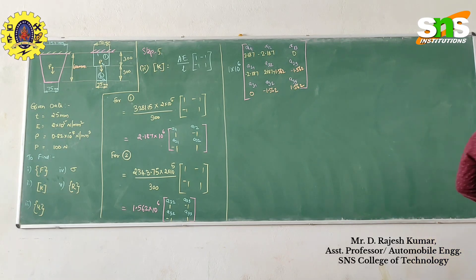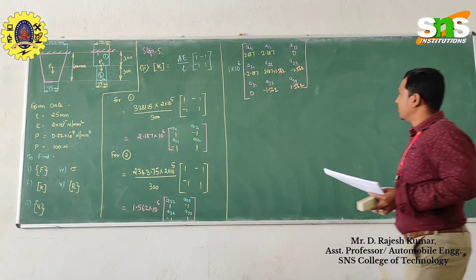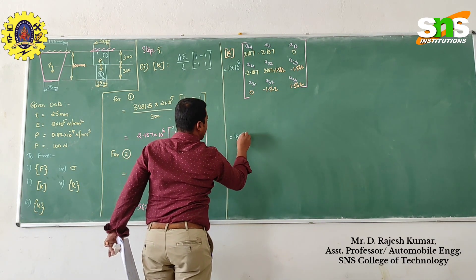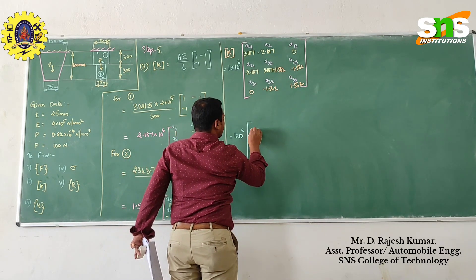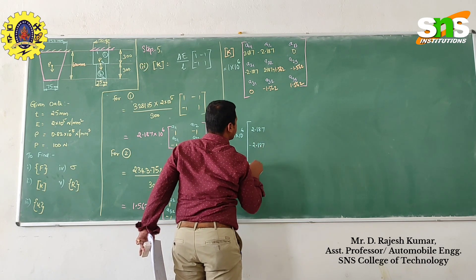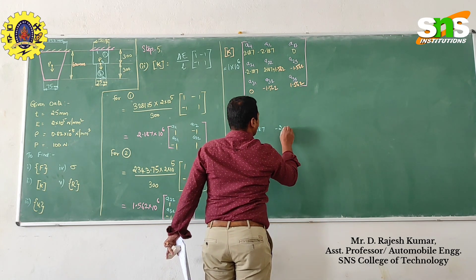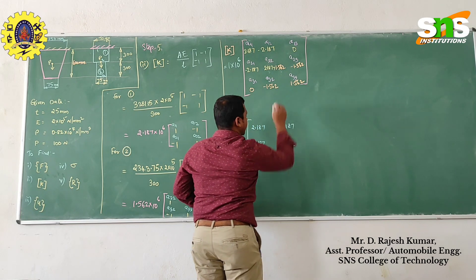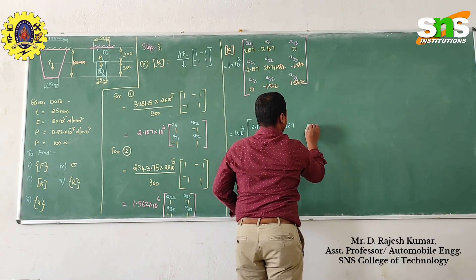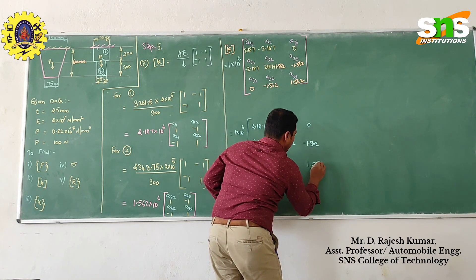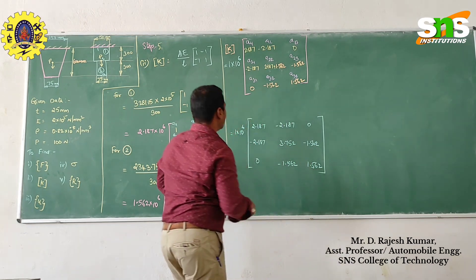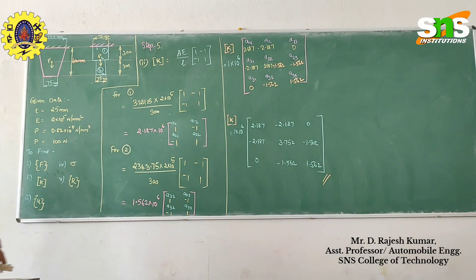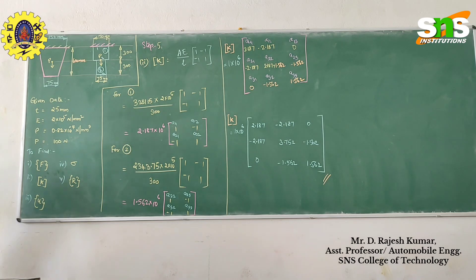This is how you write the K matrix. After writing it, the final value is 1 into 10 power 6 times the matrix: 2.187, minus 2.187, 0; minus 2.187, 3.752, minus 1.562; 0, minus 1.562, 1.562. This is how you find the stiffness matrix. So far we have found out the stiffness matrix. Thank you.